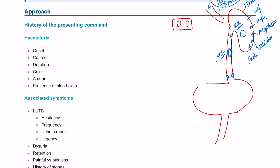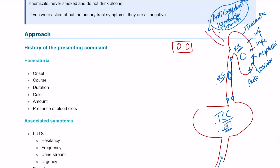In the urinary bladder, you're going to mention the same causes — traumatic, inflammatory, infective, neoplastic, and vascular — but most likely it's transitional cell carcinoma and UTI or cystitis. Moving to the urethra, causes include trauma, foreign body, inflammatory, and neoplastic. The commonest concern overall is transitional cell carcinoma, or bladder cancer, and also UTI.